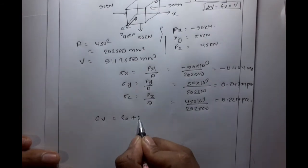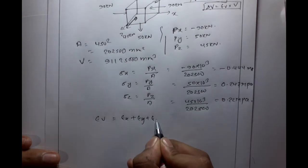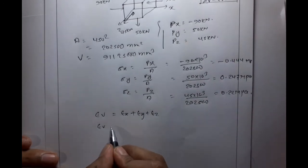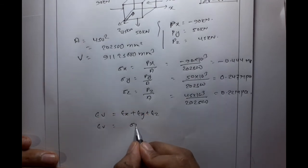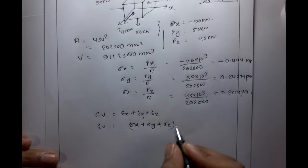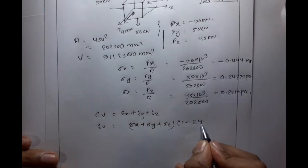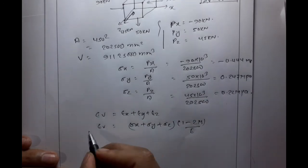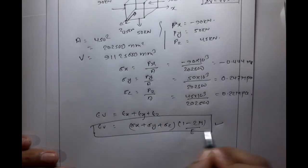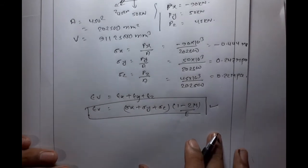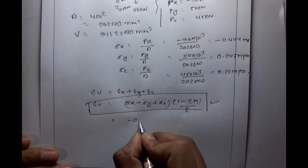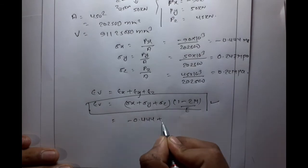The volumetric strain is given by: epsilon volumetric = epsilon x + epsilon y + epsilon z. Using the formula: volumetric strain = (Sigma X + Sigma Y + Sigma Z) x (1 - 2 mu) / E.